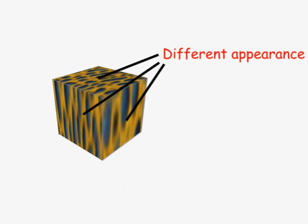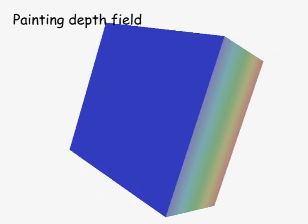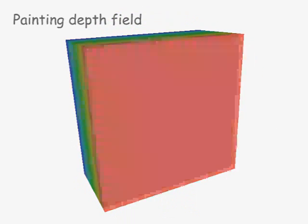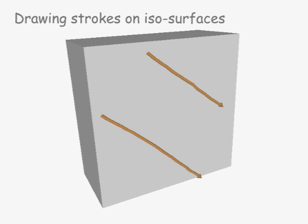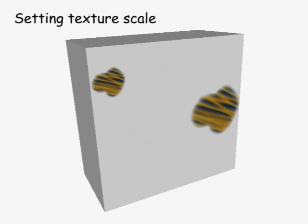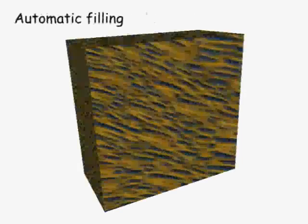This type of texture includes flattened fibers. The appearance differs in all three directions. In this case, the user first specifies the depth field. Next, the user draws strokes onto the isosurfaces of the depth field. Finally, the user specifies texture scales, and the system fills the model with the texture.